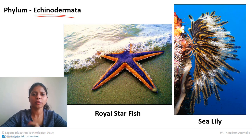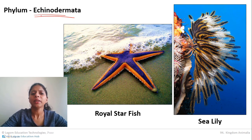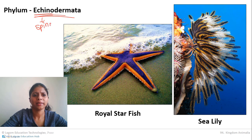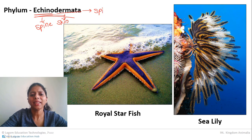The second characteristic is about the name itself. The meaning of 'Echino' is spiny or spine, and 'derma' means skin. So simply speaking, these are animals with spiny skin.